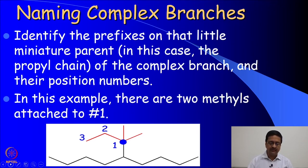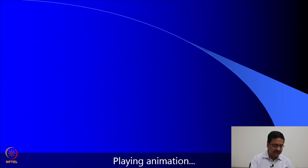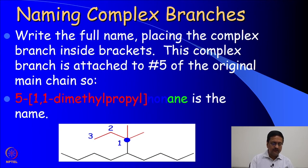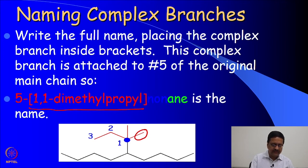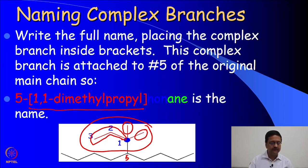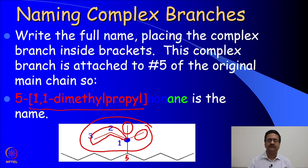In this particular example there are 2 methyl groups attached at position 1. So we write it as 1,1-dimethyl. Propyl is the name of that chain, and this complex branch is attached at the 5 position of this molecule. So we write it as 5-[1,1-dimethylpropyl] nonane, and this is the name of this particular molecule. This is how one should name a complex branch in a given molecule.